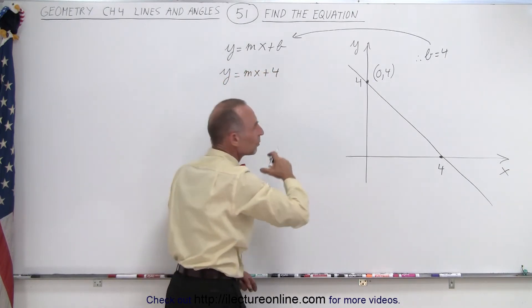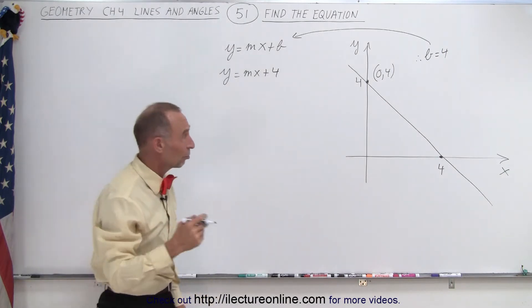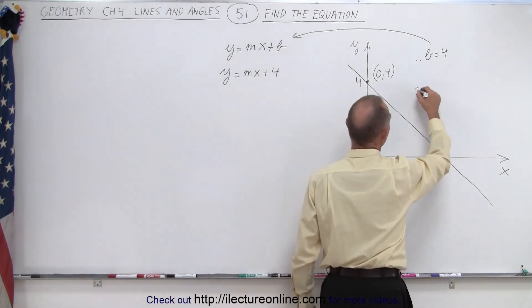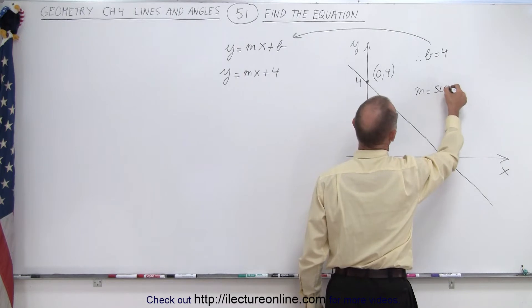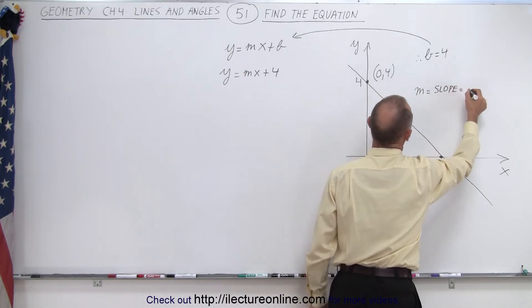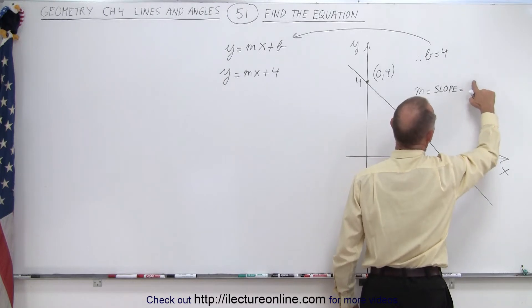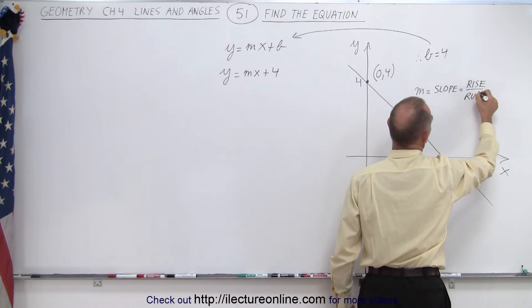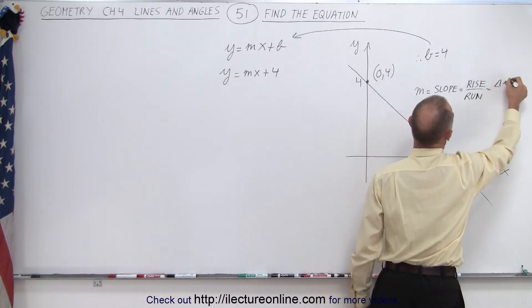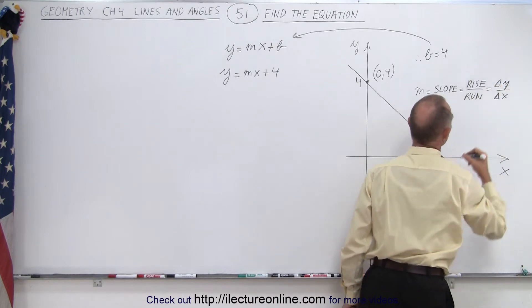So the only other thing we need to do now is find the slope. We know that m is equal to the slope, which is equal to the change in, or we could say the rise over the run. Let's write it as the rise over the run, which is equal to the change in y over the change in x. The little triangles means change in.